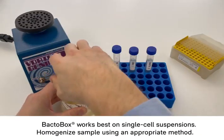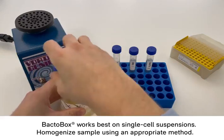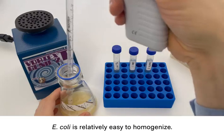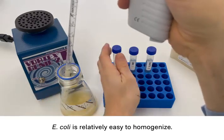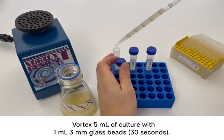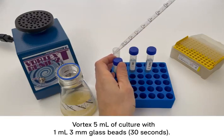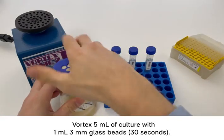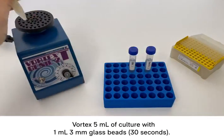Ideally we want to measure single cell suspensions and therefore we need to homogenize the sample. E. coli is relatively easy to homogenize and I do this by vortexing 5 mL of culture with 3 mm glass beads that have already been added to this tube. I do the vortexing for 30 seconds to homogenize.